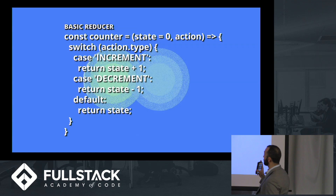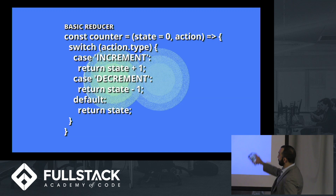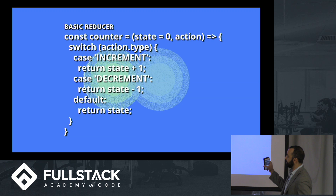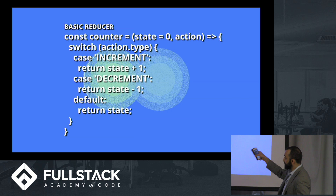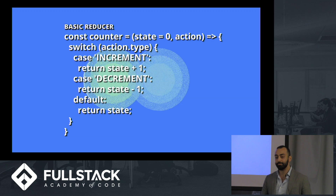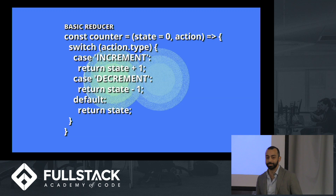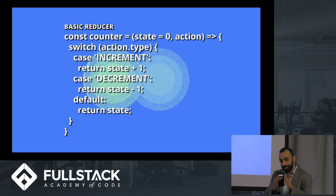Let's talk about what a basic reducer actually looks like. A reducer basically does three things: it returns either the state; if state comes in undefined, it initializes a state — you can see we do that with state equals zero; and it checks the action for action.type to see if it knows how to handle increment or decrement. If it doesn't know how to do any of those things, it returns the state. And that state might be an entire state object or just one small thing — that's the beauty of composing reducers, where one part of your state handles just one piece of information.